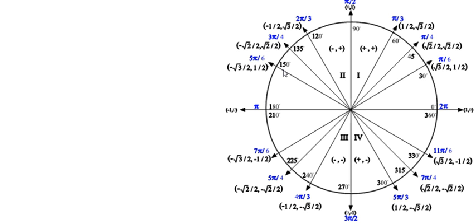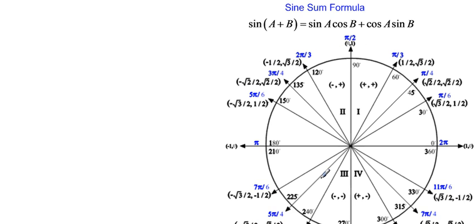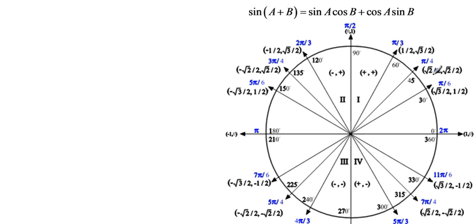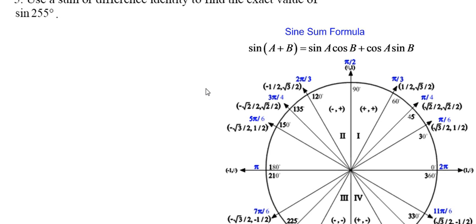Now, what we're going to do with the unit circle is, first off, you should notice that 255 degrees is not on the unit circle. It's not one of the specified angles that we have on the unit circle. So what we need to do is find two angles that either add up to or subtract to get 255 degrees. What we're going to find or use are two angles whose sum is 255 degrees.